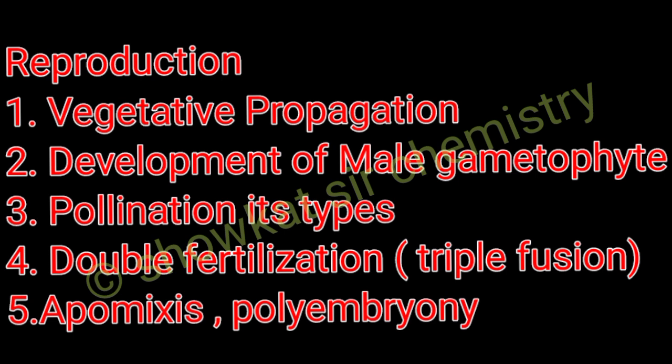In Reproduction, you will first study vegetative propagation — this will be very important. Next is development of male gametophyte. Then you will study pollination and its types, particularly cross-pollination, and similarly what is double fertilization in angiosperms, its significance, and what is triple fusion. Next you will study apomixis and polyembryony.